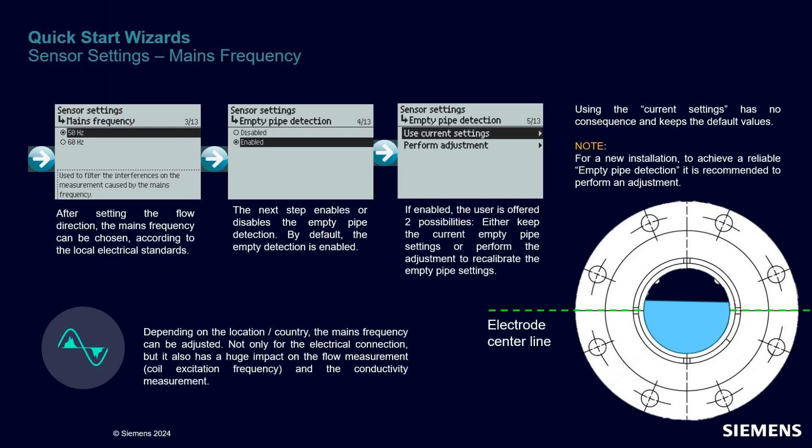Then you have the opportunity to control the empty pipe detection algorithm. If you enable it, we recommend that you perform the adjustment step to have a reliable behavior based on your environment.